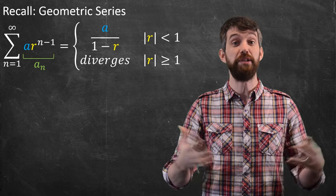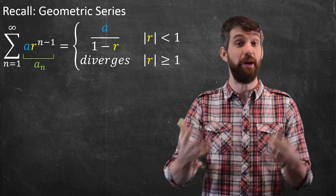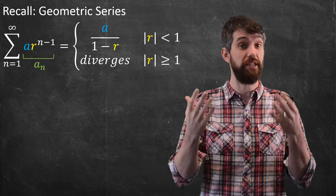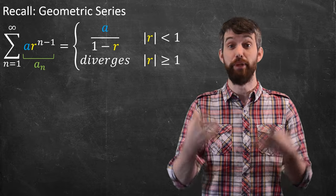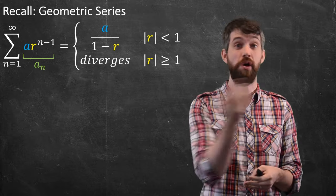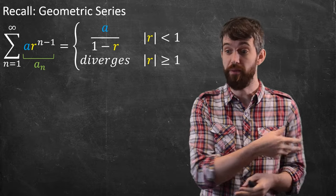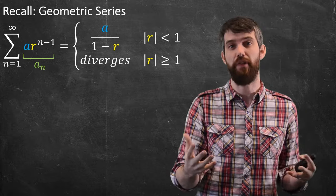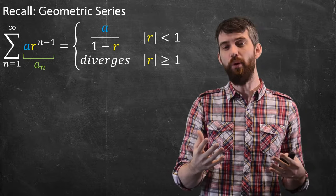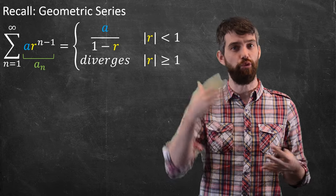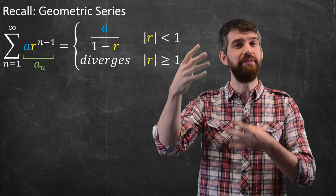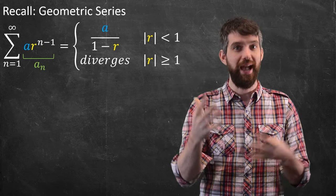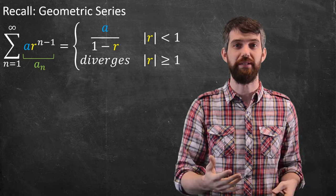I'm going to call the terms in the sequence a sub n, as I normally do. The blue a is a constant that multiplies out, and the a sub n is the entire thing. What I want to do is investigate the ratio of successive terms in a geometric series.